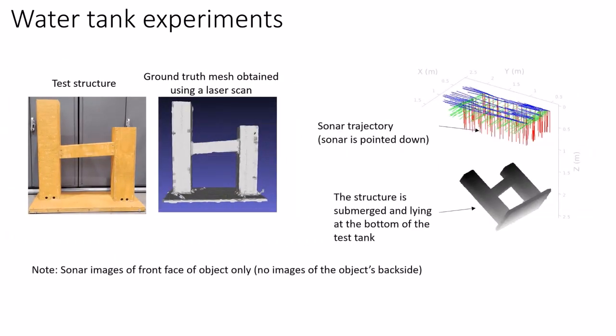The sonar is pointed downward and the structure is submerged and located at the bottom of the test tank. Therefore, we have sonar images of the front face of the object only and no images of its backside.